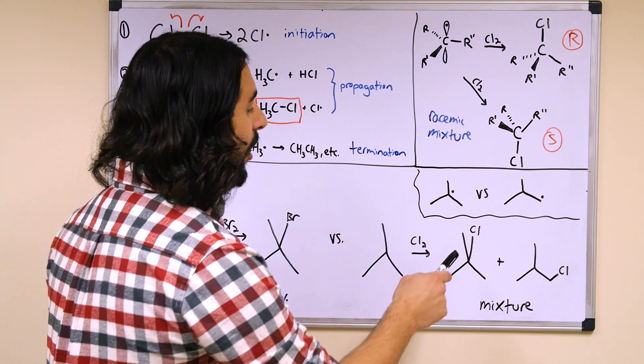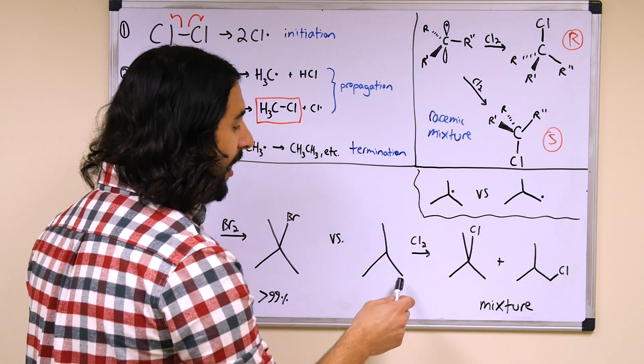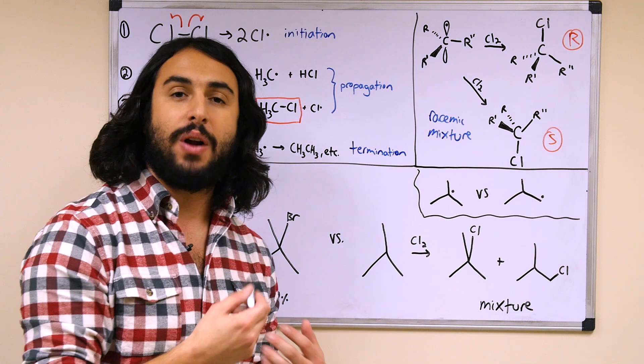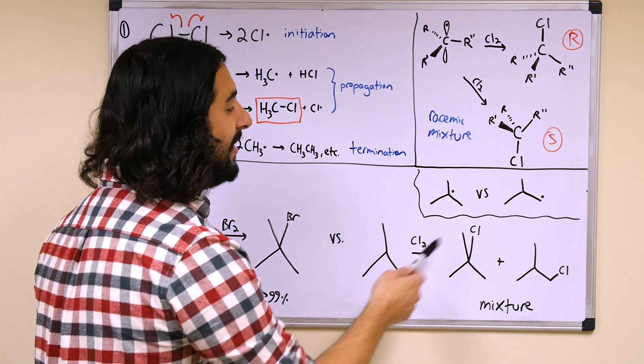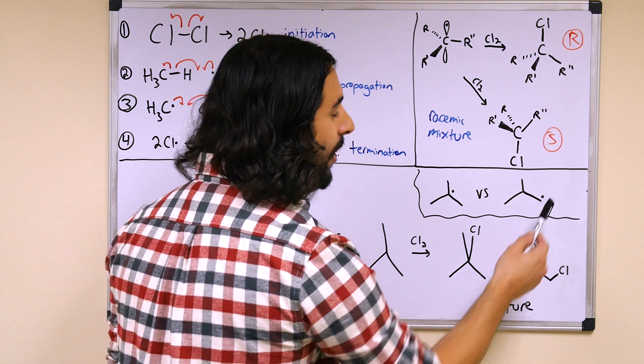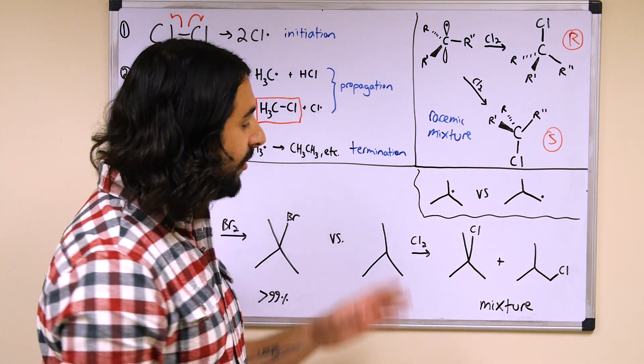No matter where it collides with this molecule, it's going to extract whatever hydrogen it can get, even if it ends up generating the less stable primary alkyl radical intermediate.